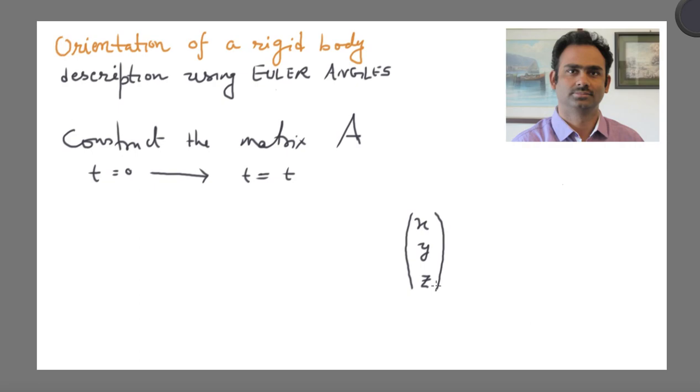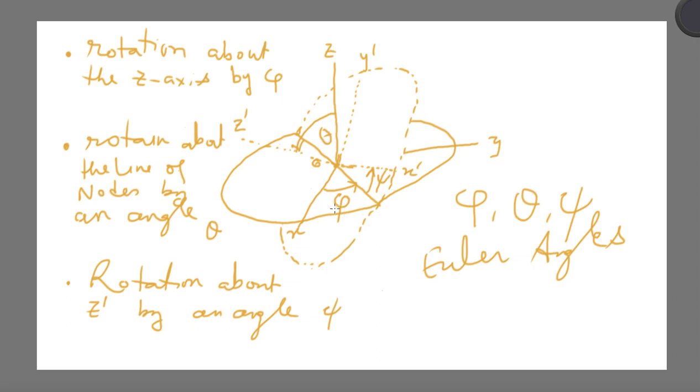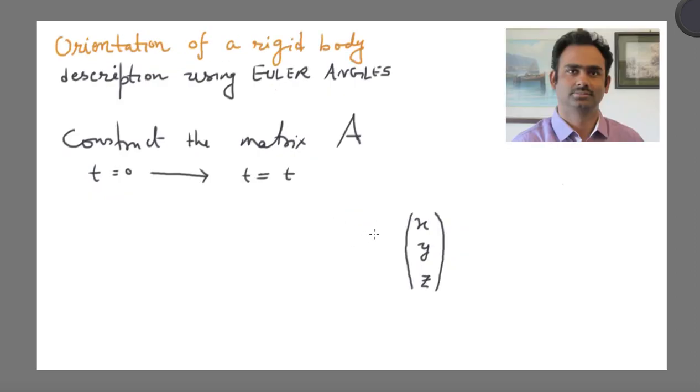Then we do a set of transformations. Remember what was the first transformation? It was a rotation about the z-axis. Let's remember here. First rotation was a rotation by angle phi about the z-axis, which means that here I should have a matrix which will do the rotation by angle phi.